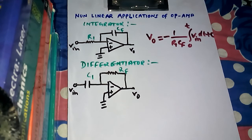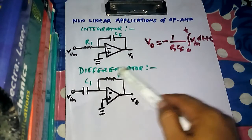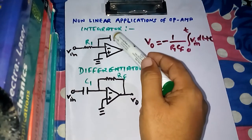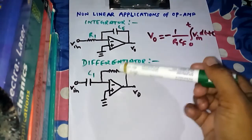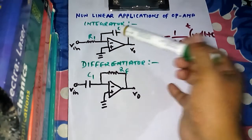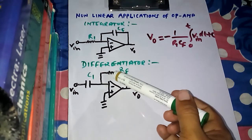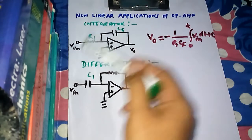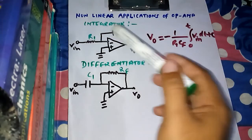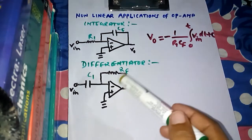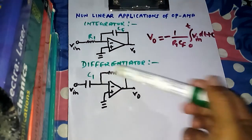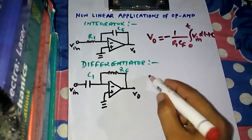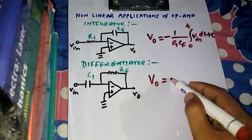Notice that it is very easy to get the differentiator circuit from the integrator circuit — we simply exchange the places of R1 and C-F. In the integrator, there is a capacitor in the feedback circuit and a resistor before the op-amp; in the differentiator, there is a resistor in the feedback circuit and a capacitor before the op-amp. This is a useful trick to remember how to draw the differentiator when you know the integrator circuit.